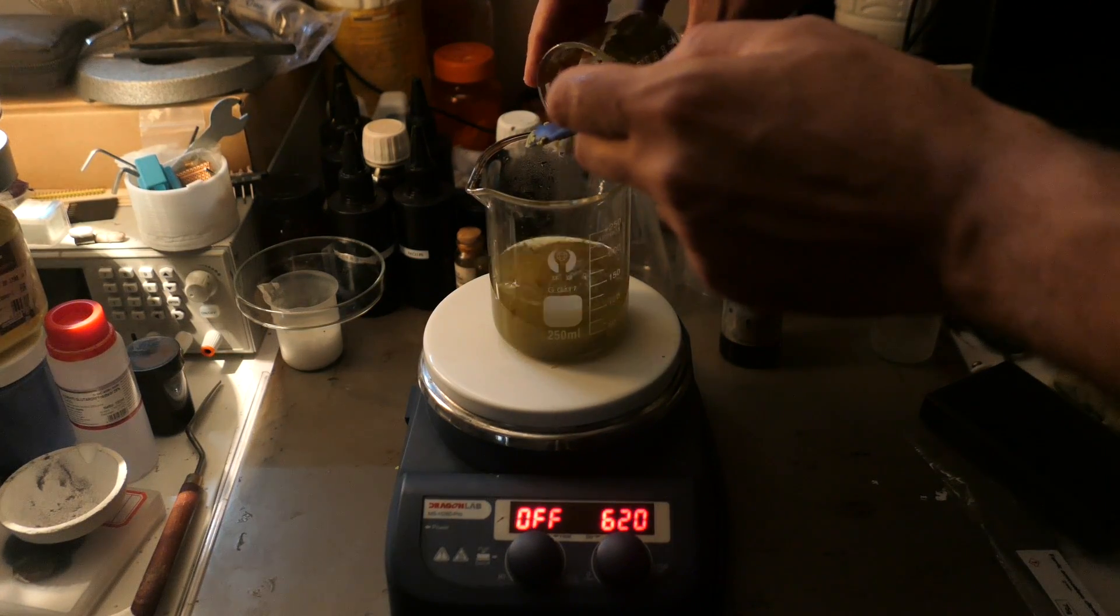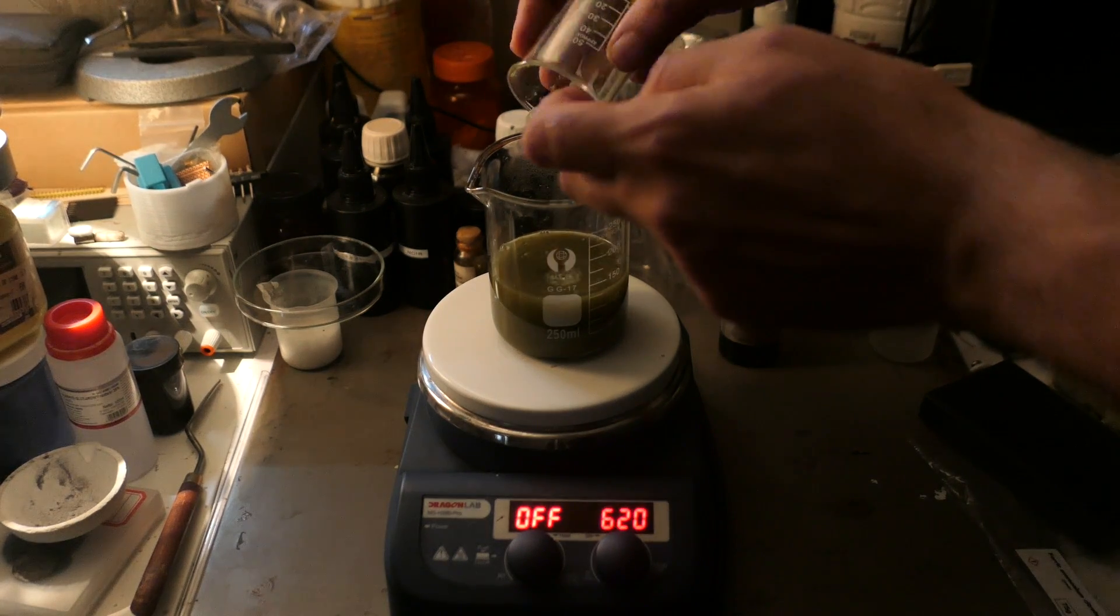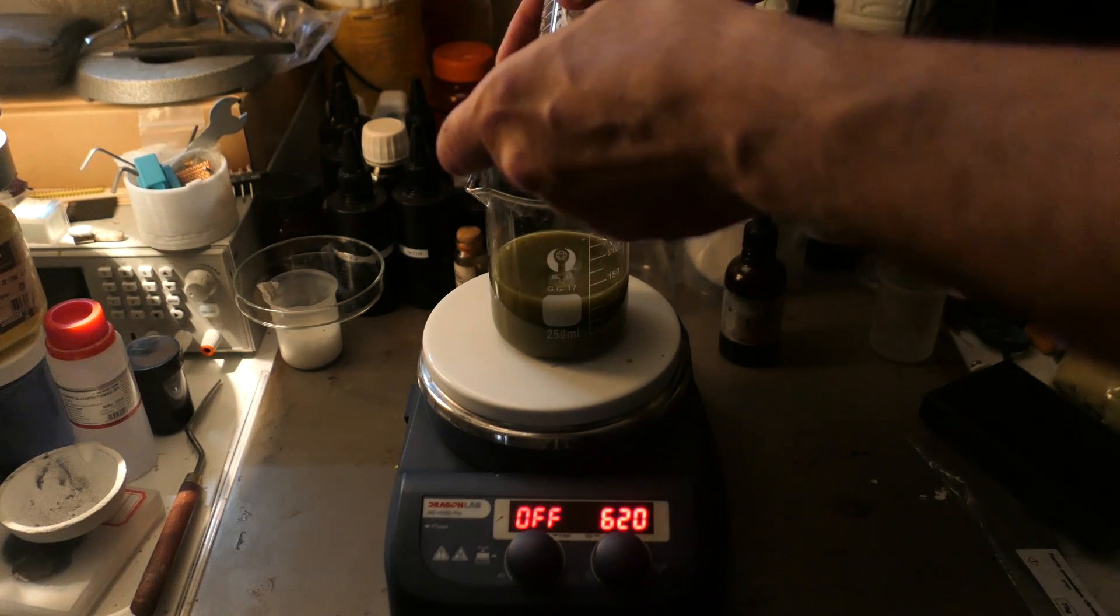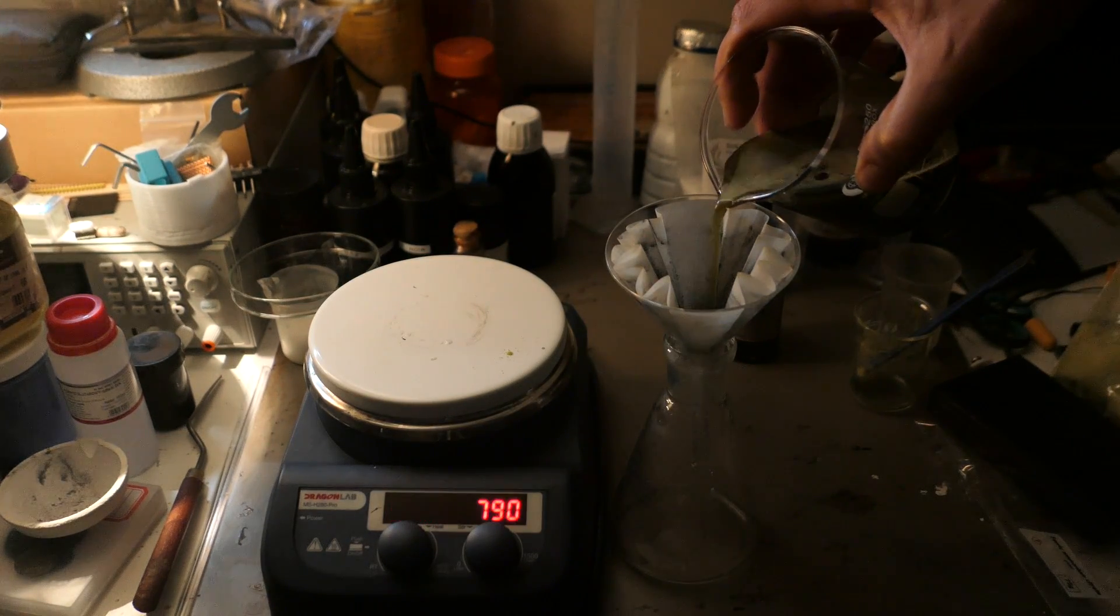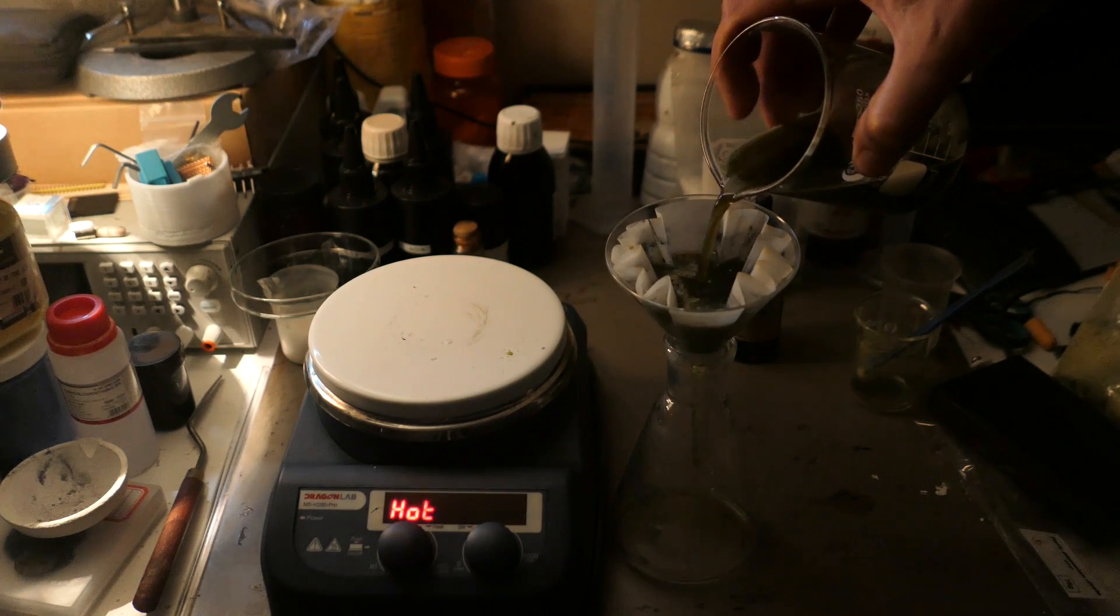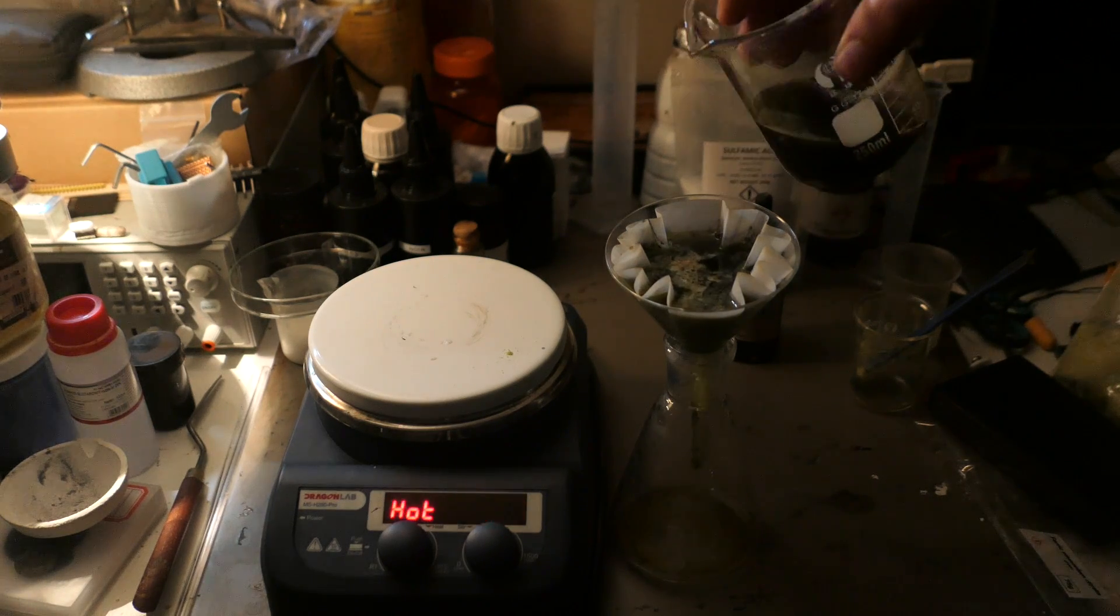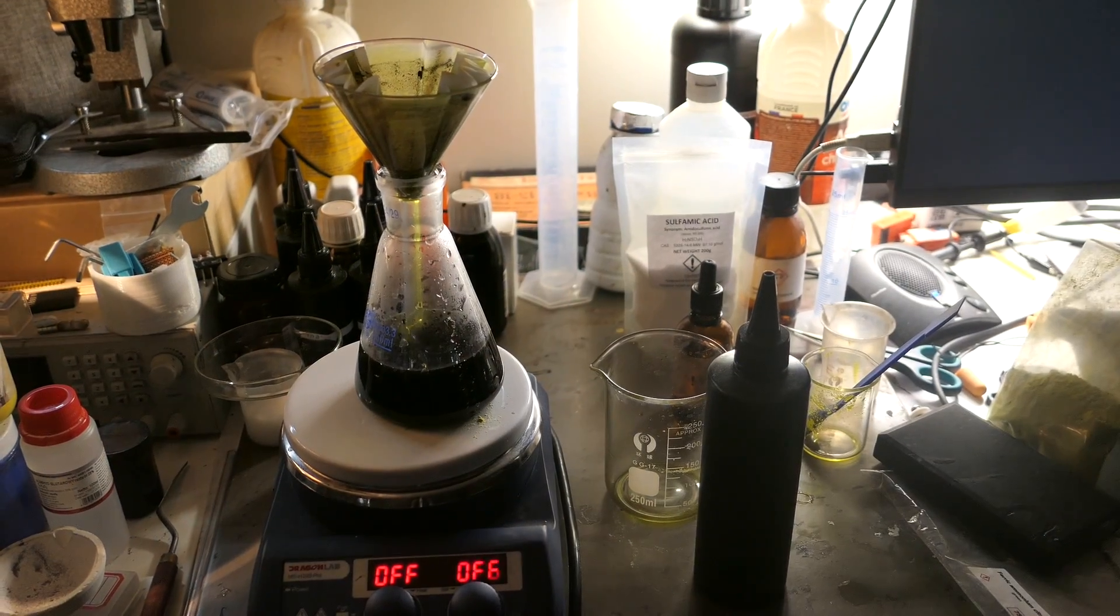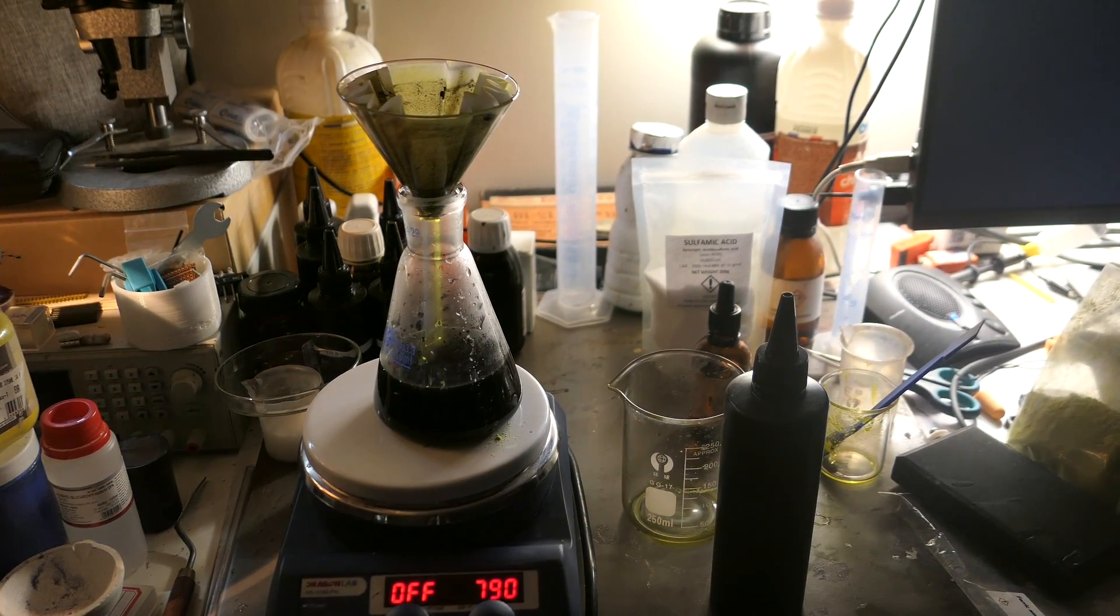Shake to obtain a clear solution. If it's not perfectly clear, it's not a problem, as the solution is now filtered. The result is a clear, dark green solution that appears yellow when spread on paper.